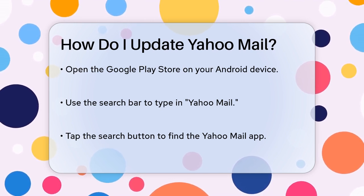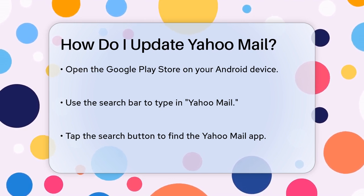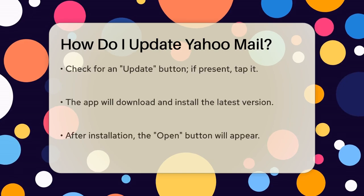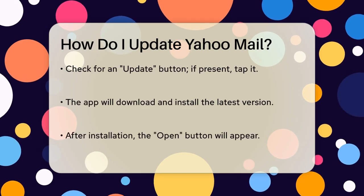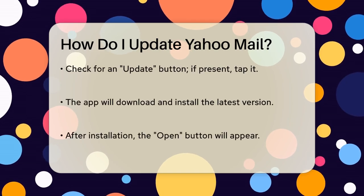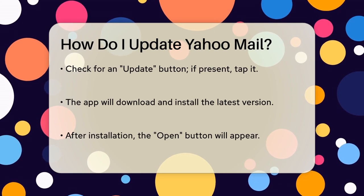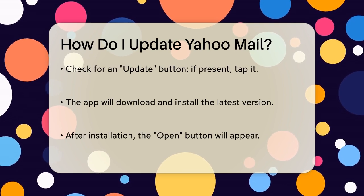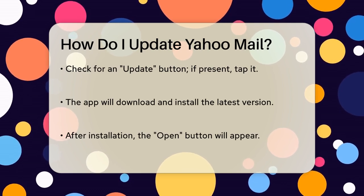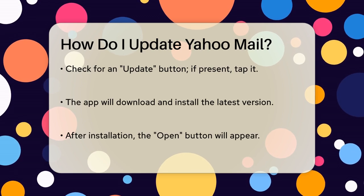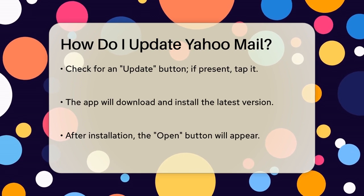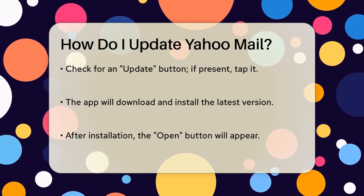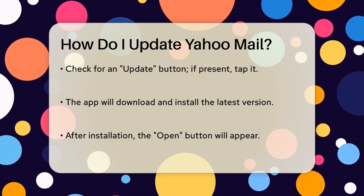Tap on the Update button to start the download process. The app will begin downloading and installing the update. Once it's complete, you'll see the Open button again. Tap on Open to launch the updated Yahoo Mail app, and you're all set to start using it with the latest features and fixes.